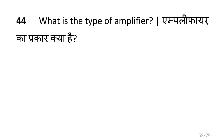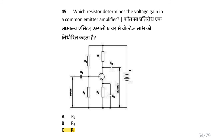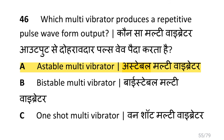What is the type of amplifier? i.e. common emitter amplifier. Which resistor determines the voltage gain in a common emitter amplifier? i.e. RL.